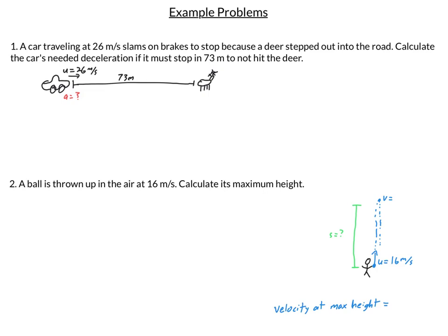Alright so let's work a couple of example problems. First, this x-axis problem: I've got a car traveling at 26 meters per second. As you're doing these it's always good to underline and then label what it is, so it's already traveling at 26 meters per second, that's my initial velocity u. Slams on brakes to stop because a deer stepped out in the road. Now this term 'to stop' tells me what my final velocity is: v equals zero.